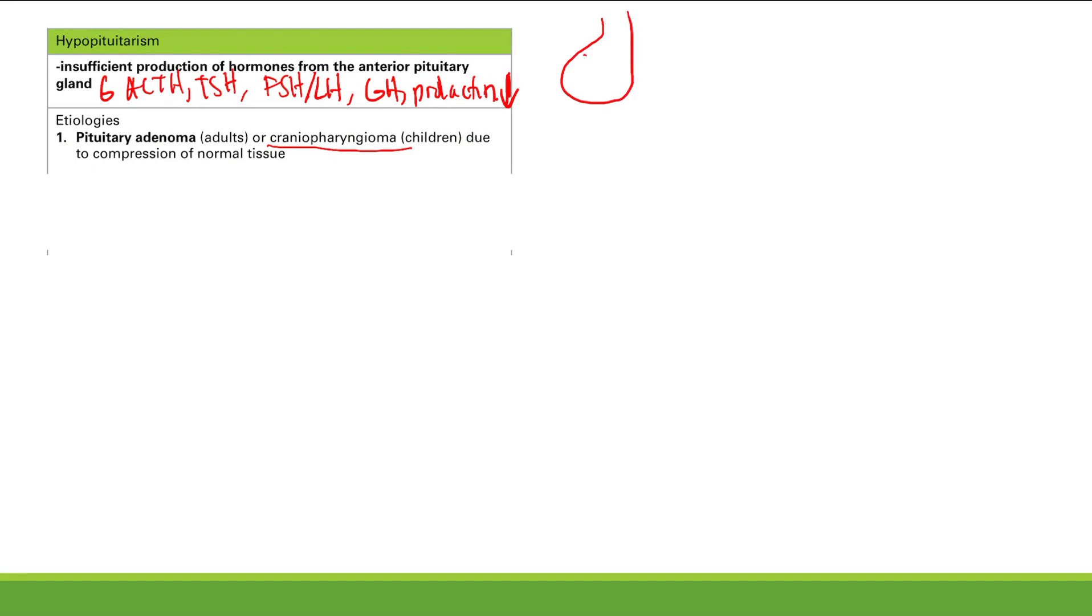And so that normal tissue is not going to work. So this is the pituitary gland. You get a tumor here. And you get a pituitary adenoma in adults and a craniopharyngioma is what you see in kids. Tumor compression causes atrophy and these cells don't work. They don't make hormones.